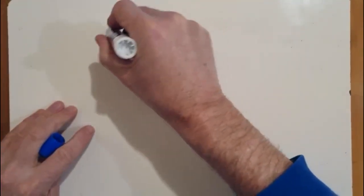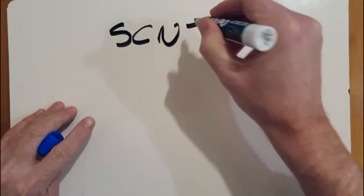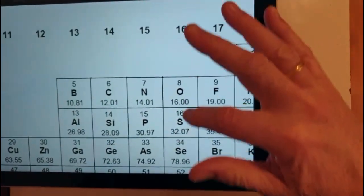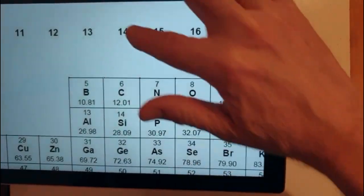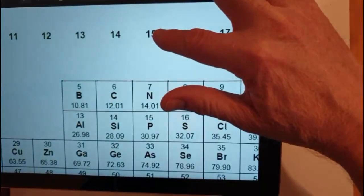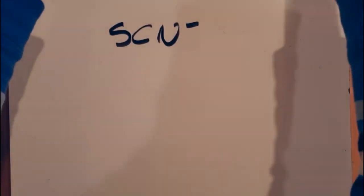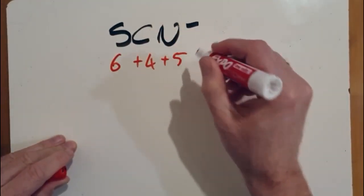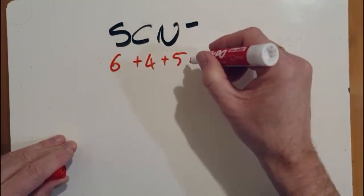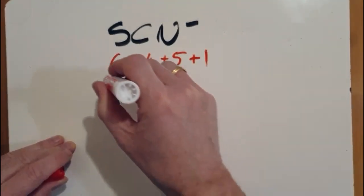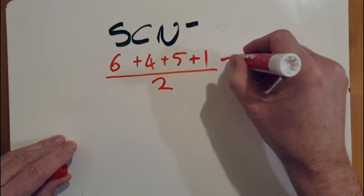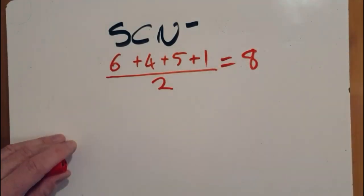The thiocyanate ion, SCN minus. To do the Lewis structure, first we need to know the number of valence electrons. Sulfur is in group 16, so that's 6 valence electrons. Carbon is in group 14, that has 4, and nitrogen is in group 15, so that has 5. So we've got 6 plus 4 plus 5, and that negative implies there's one more electron — it's a negative ion. I'm interested in pairs of electrons, so dividing by 2 gives me 8 electron pairs to distribute.